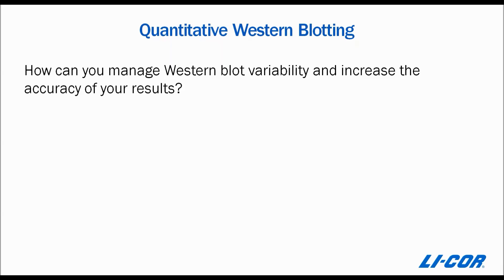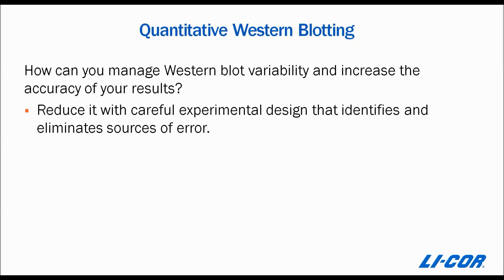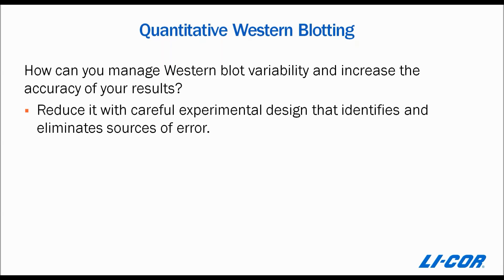How can you manage Western blot variability and increase the accuracy of your results? The key is to maximize precision to make relative comparisons as meaningful as possible. You can reduce the variability by careful experimental design that eliminates and identifies sources of error, and by using the appropriate internal loading control for your Western blot normalization.